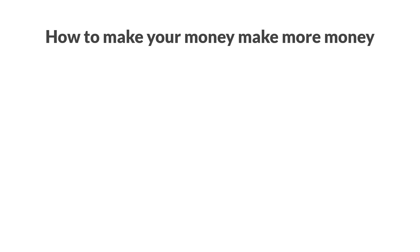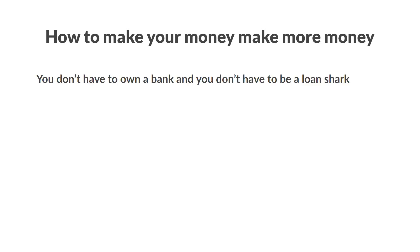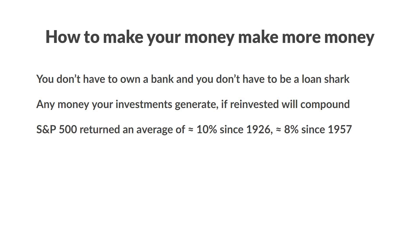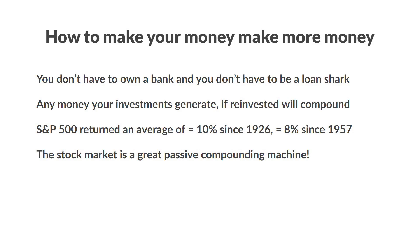How can we all have the power of compounding work for us instead of against us? You don't have to summon a magic penny, own a bank, or be a loan shark. Bonds are just one asset class that pays interest, but try looking at any investment return as if it were interest — it's not really any different, we just tend to call it differently. Any money your investments and assets generate, if reinvested, will result in compounding. The stock market, for example, has generated an annualized return of about 10% looking at the S&P 500 since inception, and about 8% since the index was expanded to 500 stocks, making it a great passive compounding machine over the long term.